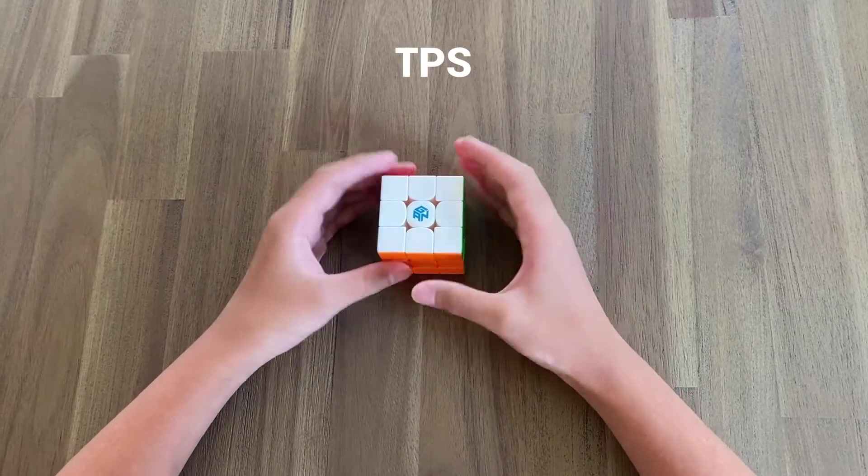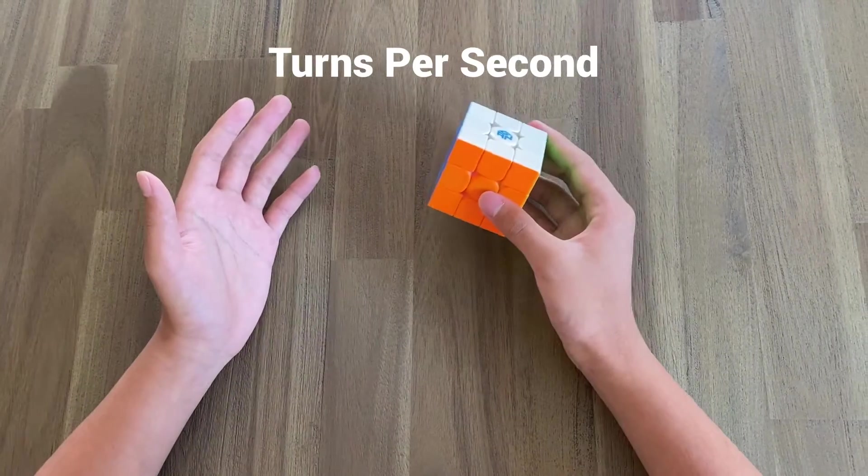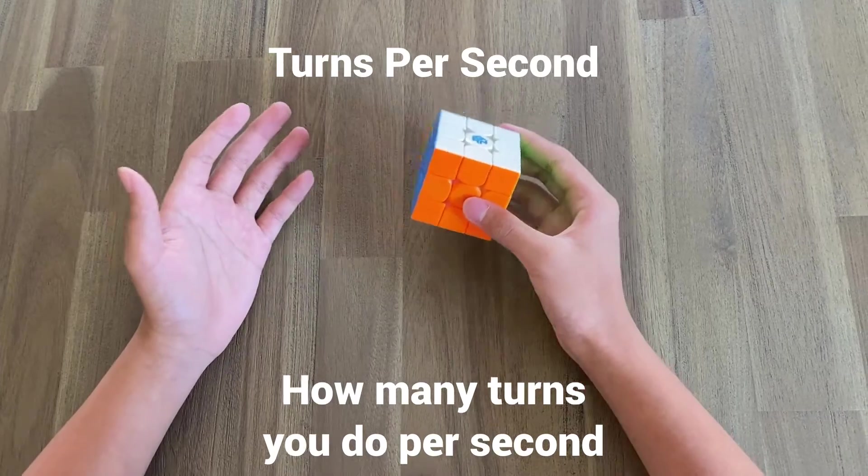TPS is an acronym for turns per second, and it's how many turns you do per second.